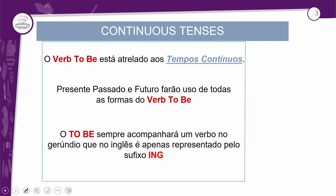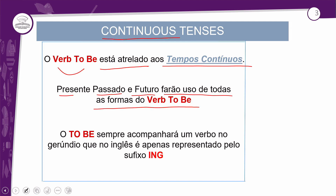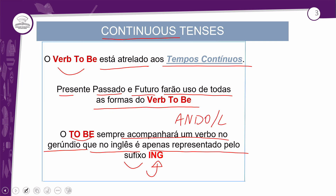Esses tempos contínuos têm tudo a ver com o verbo to be — aquele verbo tão falado que a galera diz que não aguenta mais aprender, mas não sabe a importância dele no inglês. Ele é de extrema importância porque está atrelado aos tempos contínuos. Você sempre vai usar o verbo to be nos tempos contínuos, não como verbo principal. Presente, passado e futuro farão uso de todas as formas do verbo to be, porque o to be sempre acompanhará um verbo no gerúndio — no inglês representado pelo sufixo ING.